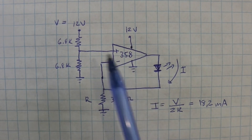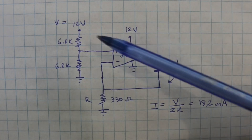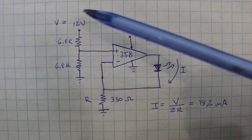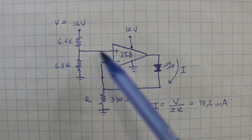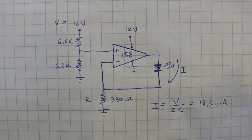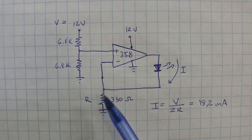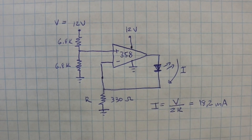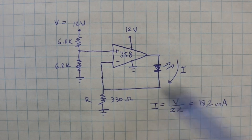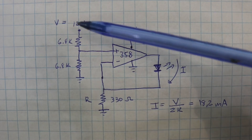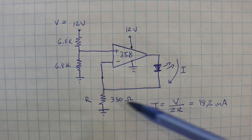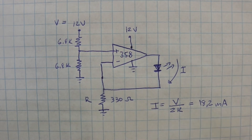So we connect the operational amplifier in this way. Here we have a voltage divider, so using an input voltage of 12 volts, here we will have 6 volts. Apart from that we only have this resistor which determines the output current. The current through the LED will be given by this simple formula — it is the input voltage divided by 2 times the value of this resistor. Using the values that we have, 12 volts for V and 330 ohms for R, we get a current of 18.2 milliamps.